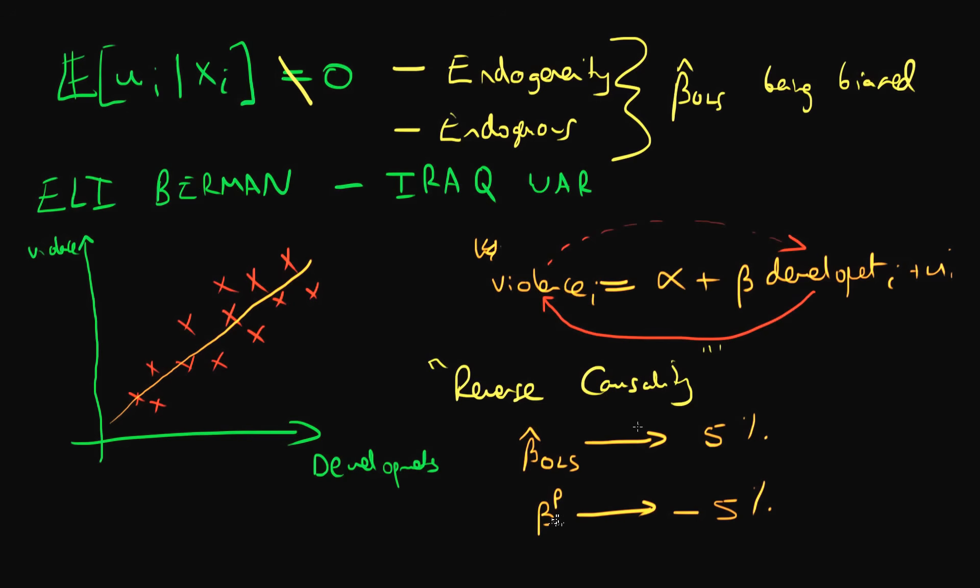What can we do about this issue of reverse causality? Well, one of the ways is to use instrumental variables estimation. If you can find a suitable instrument—and I'm going to talk about instrumental variables in another video—just to say that there are ways in which you can deal with it.